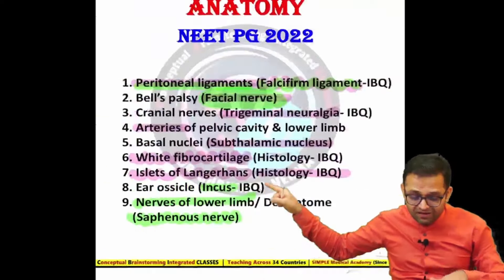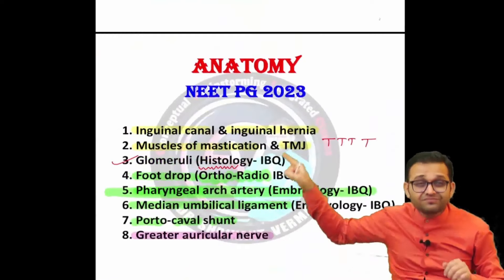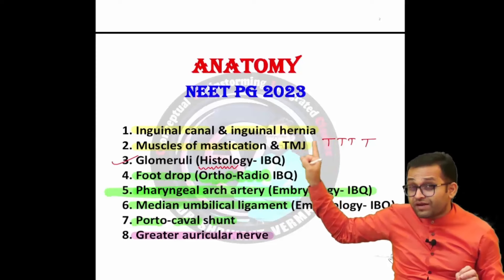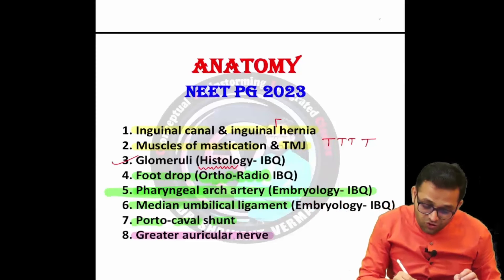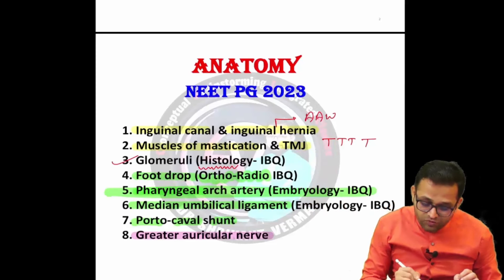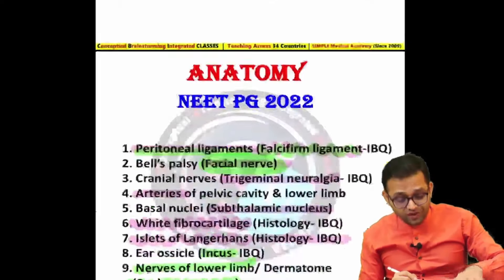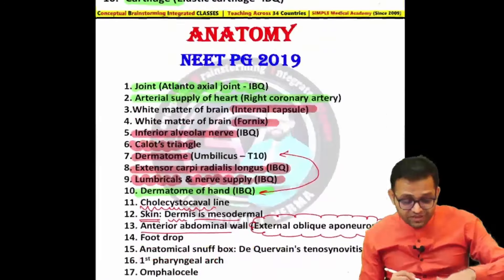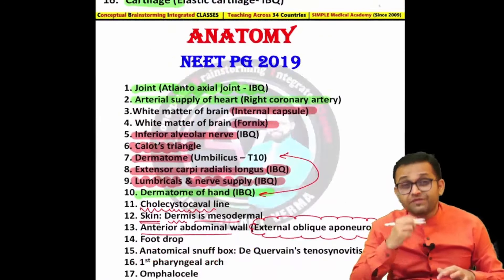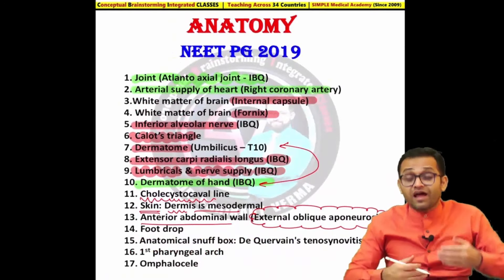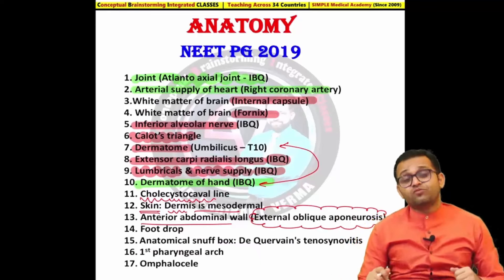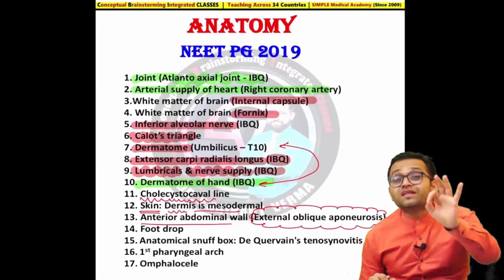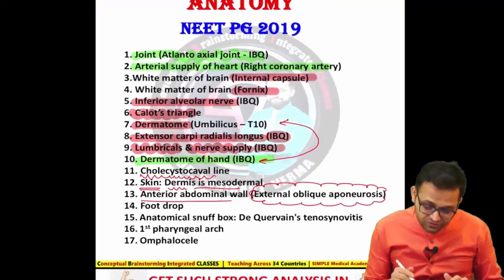The anterior abdominal wall topic includes the inguinal canal and inguinal hernia — this was asked in NEET PG 2023. You cannot neglect the anterior abdominal wall topic. In the FMGE, they continuously ask about the different lines of the anterior abdominal wall which divide it into nine quadrants.